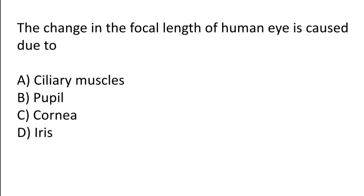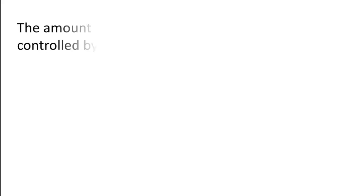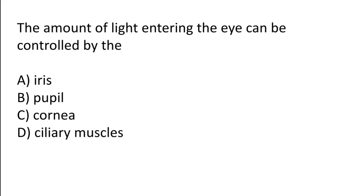The change in the focal length of the human eye is caused due to: ciliary muscle, pupil, cornea, or iris. The correct answer is option A — the change in the focal length of the human eye is caused due to the ciliary muscle.